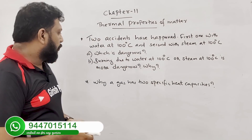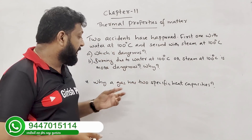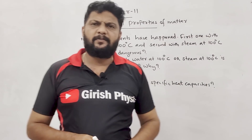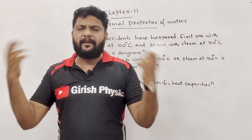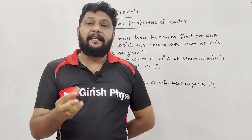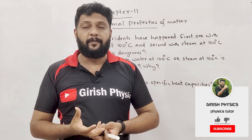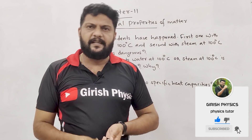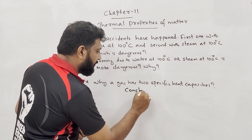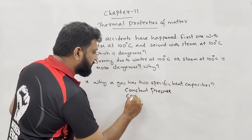Why does a gas have two specific heat capacities? When we heat a gas, it expands. So two specific capacities must be considered — one at constant pressure, one at constant volume.